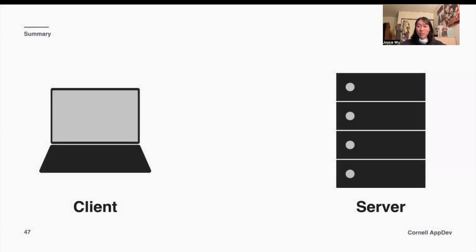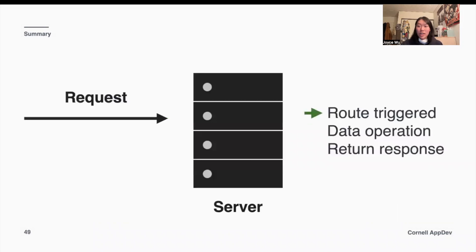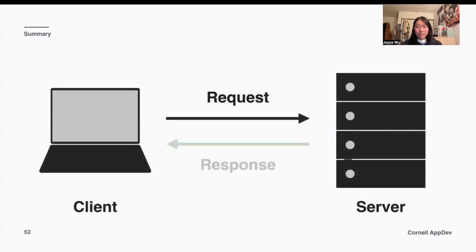As a quick summary of what we went over today: we went over the client-server model, which is the basic model for any app. We have a client that runs front end code and a server that runs back end code — they communicate with each other to help the app function. The client sends the server a request, which triggers a route in the back end that does some business logic and operations. Then the server sends a response back to the front end, giving us back some kind of information or telling us that something has been completed.